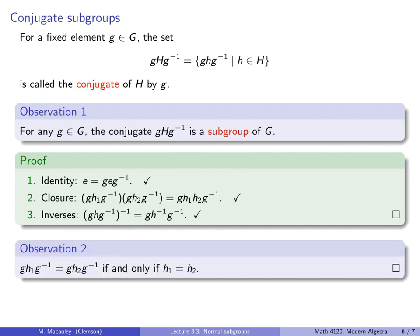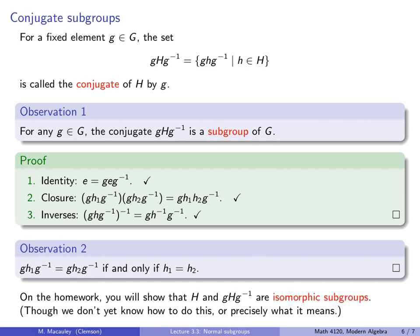So our second observation, which is proof I will leave as an easy exercise, is that gH1 g inverse, and gH2 inverse, are equal if and only if H1 equals H2. I should mention that also on the homework, you will show that these two subgroups, H and any conjugate of H, are actually isomorphic, meaning they have the same structure. Now technically, we don't know what that means formally, we just have a general idea of the concept, and so we will have to save that for the next series of lectures.